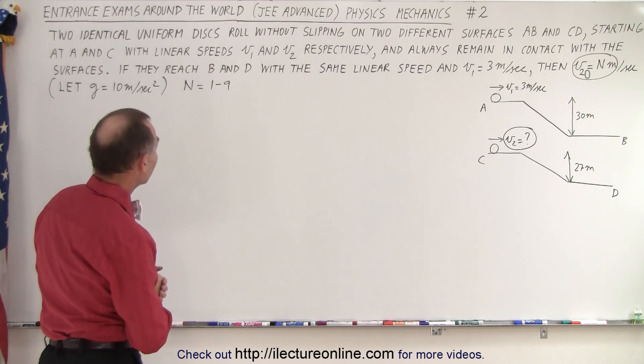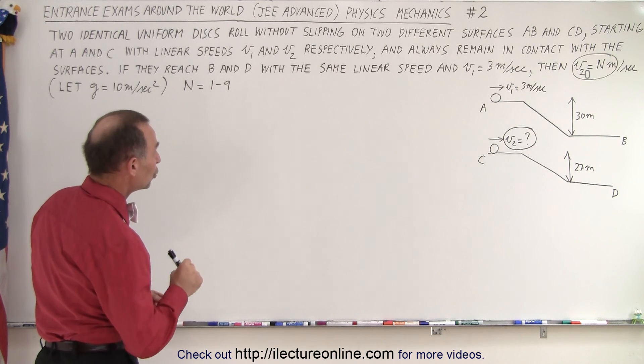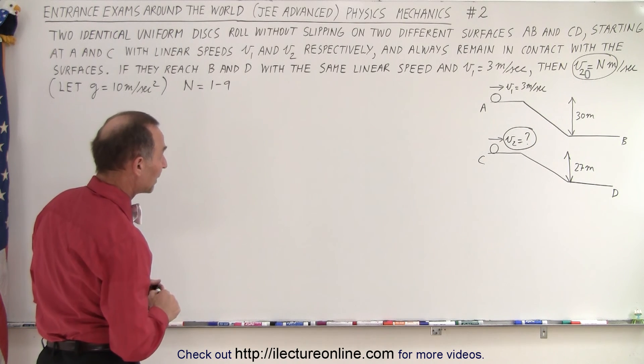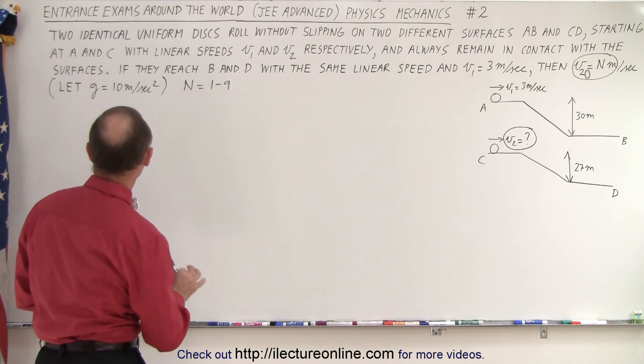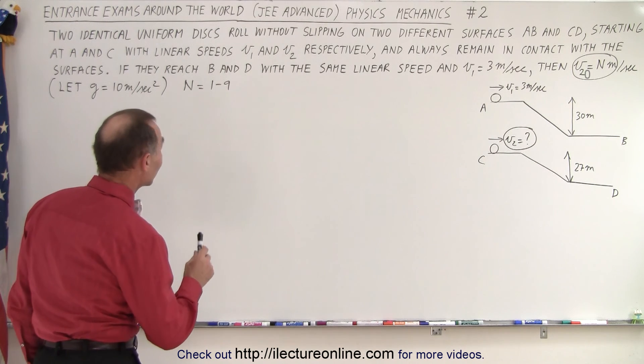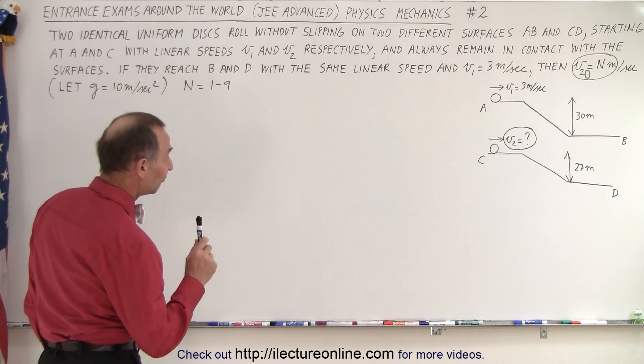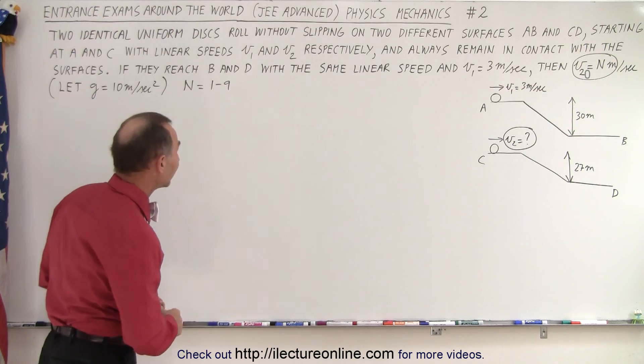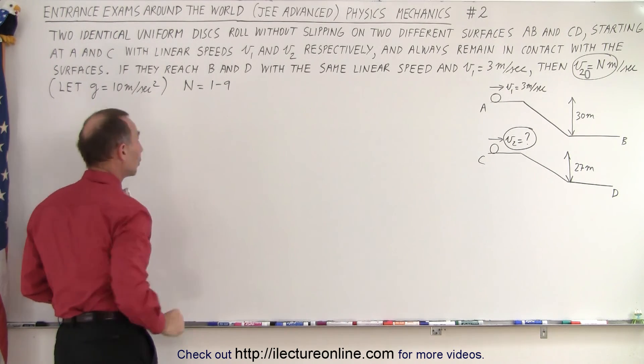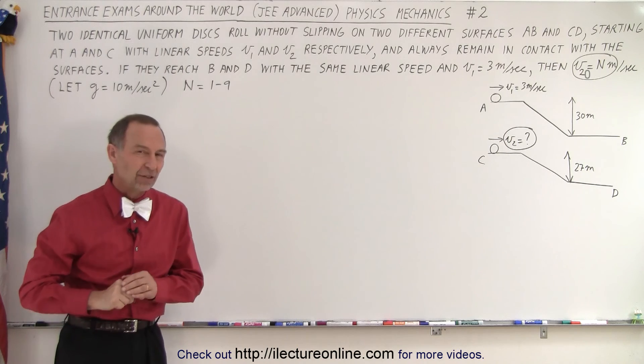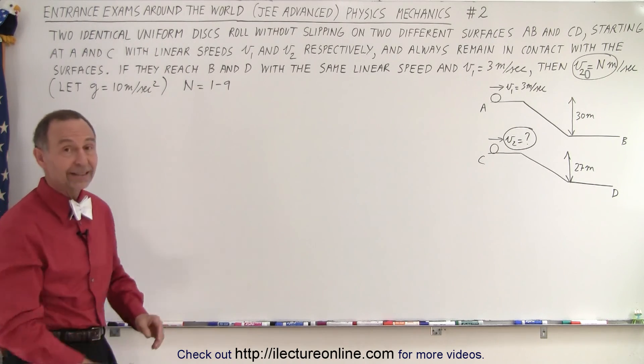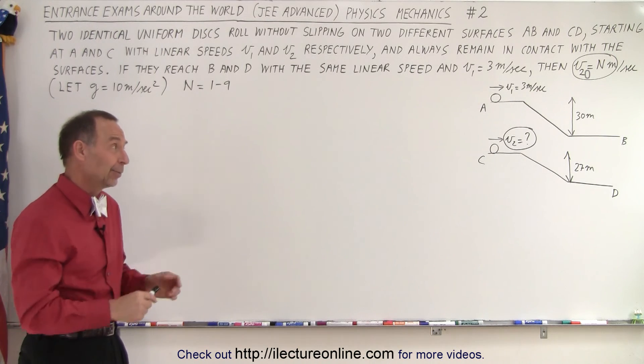Two identical uniform discs roll without slipping on two different surfaces AB and CD, starting at A and C with linear speeds V1 and V2 respectively, and always remain in contact with the surfaces. If they reach B and D with the same linear speed and V1 is 3 meters per second, then what is V2 in n meters per second, n being somewhere between 1 and 9? We're going to take g equals 10 meters per second squared to make the equations come out a little bit simpler since we don't have a calculator. You're not allowed calculators on this test, so we have to do our best here.